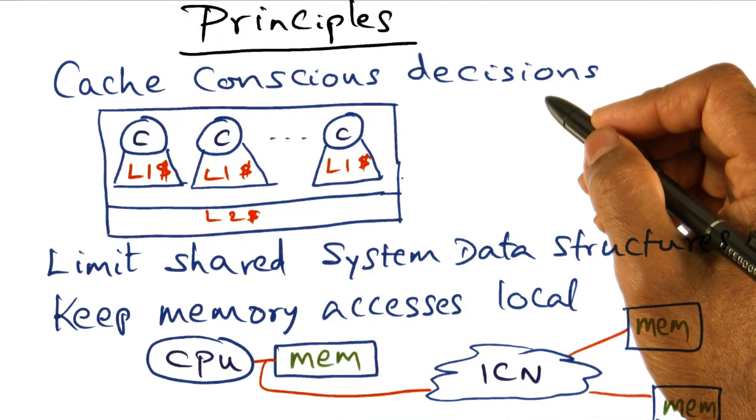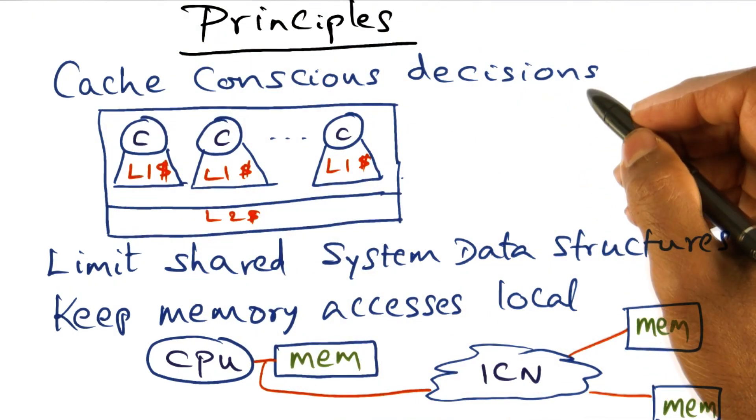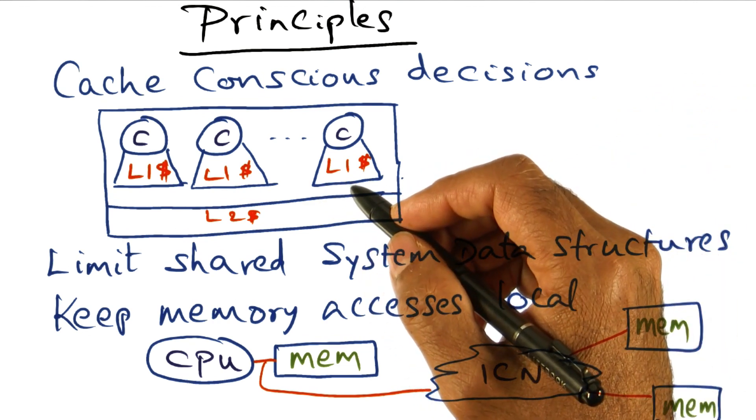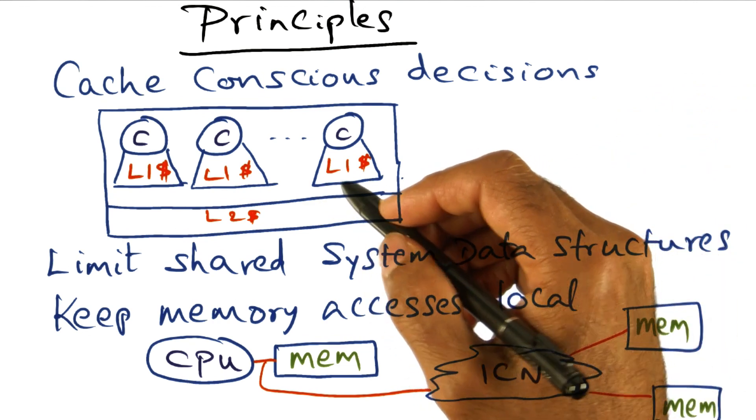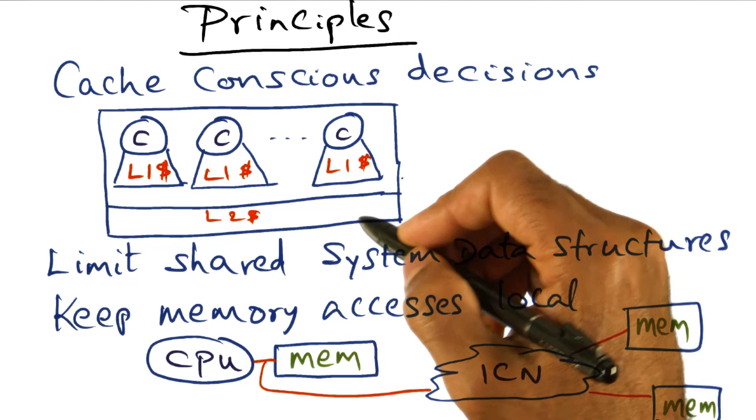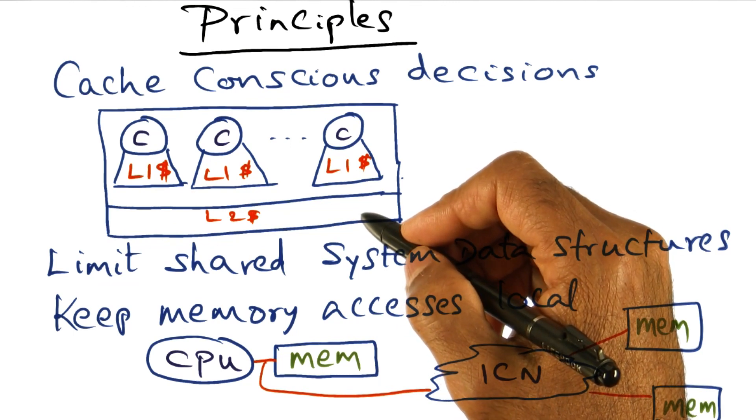The first principle is of course cache conscious decisions. What that means is you want to pay attention to locality, exploit affinity to caches in scheduling decisions for instance.